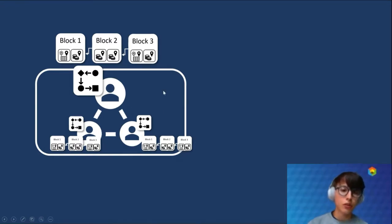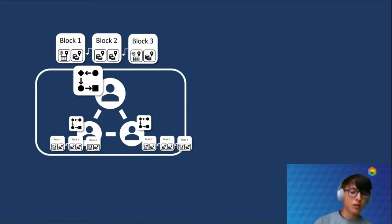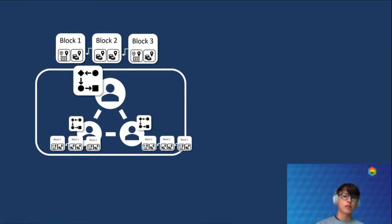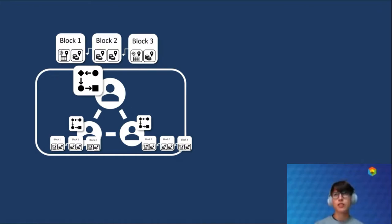By having the smart contracts be deterministic — meaning with the same input they provide the same output — the nodes can check with each other if they got the same output and ensure the credibility of the execution. So you cannot become a node of a blockchain network, execute something totally different, take all the coins provided with the transaction and run away, because the other nodes will notice.